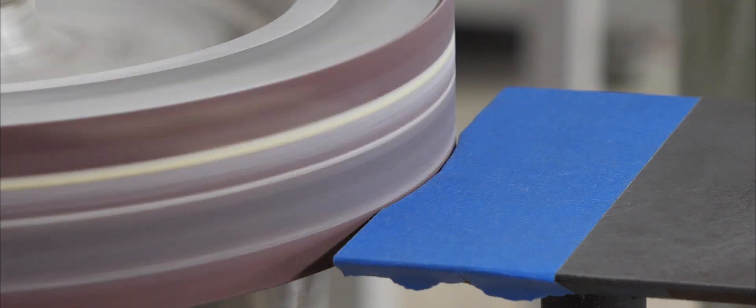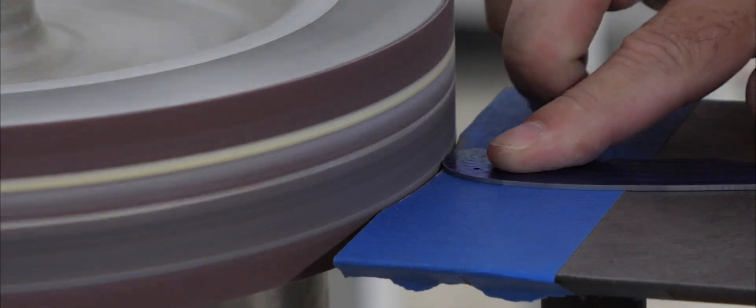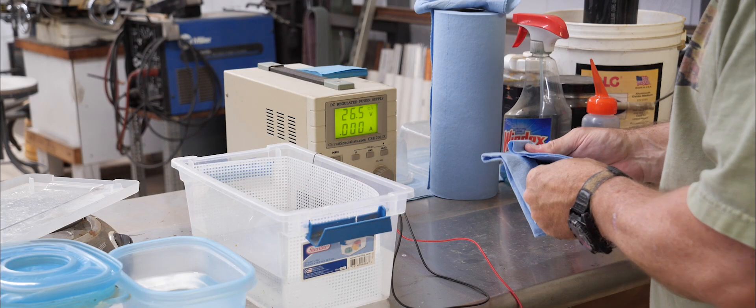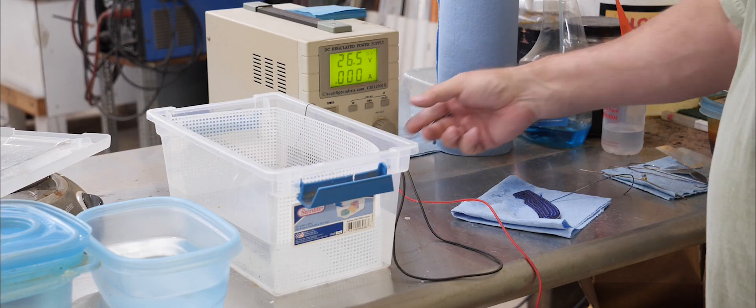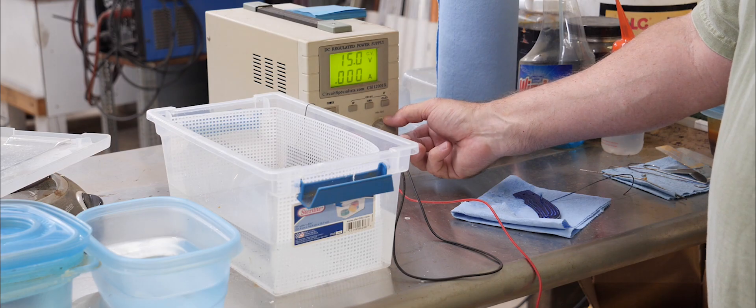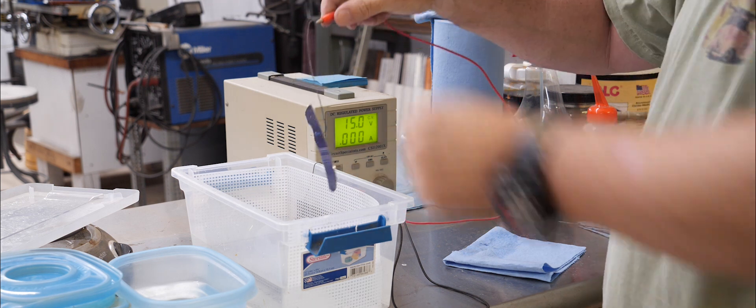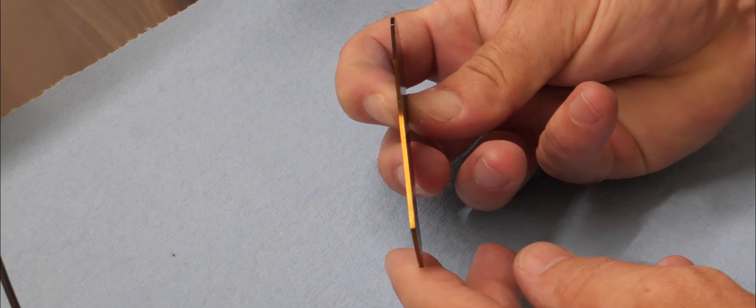Then we can achieve two-color anodizing by removing some of the blue and going back to a lower voltage. Right now I'm going to sand off the blue on the edge of the liner and then we'll take it back and anodize at 15 volts. And now we've got the nice blue on the jeweled side and the bronze on the edge.